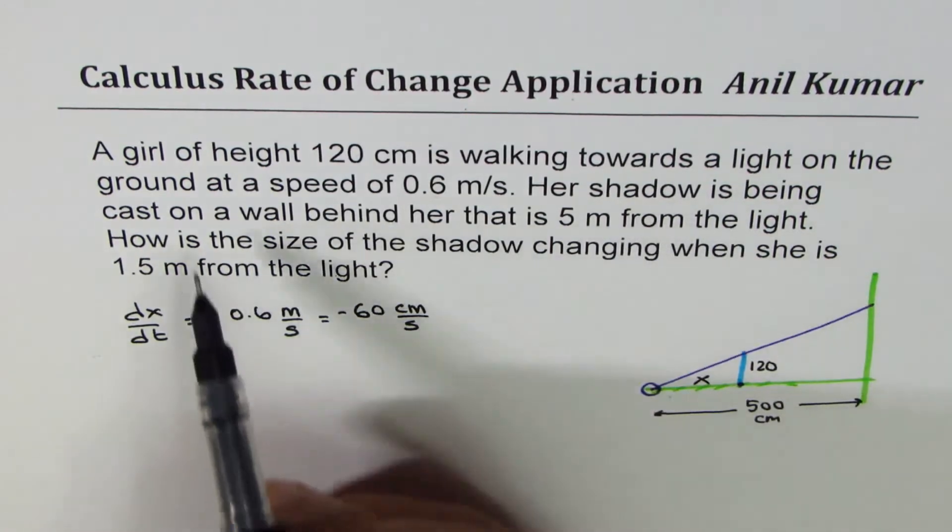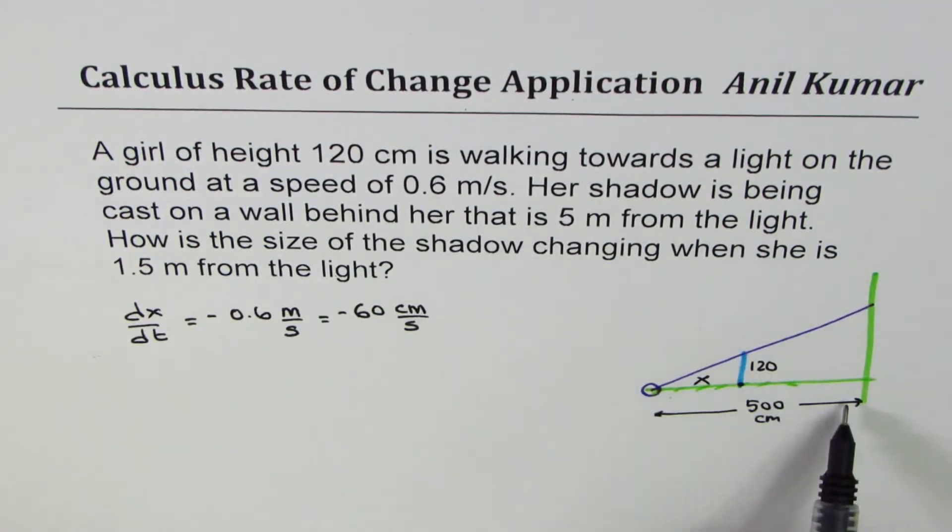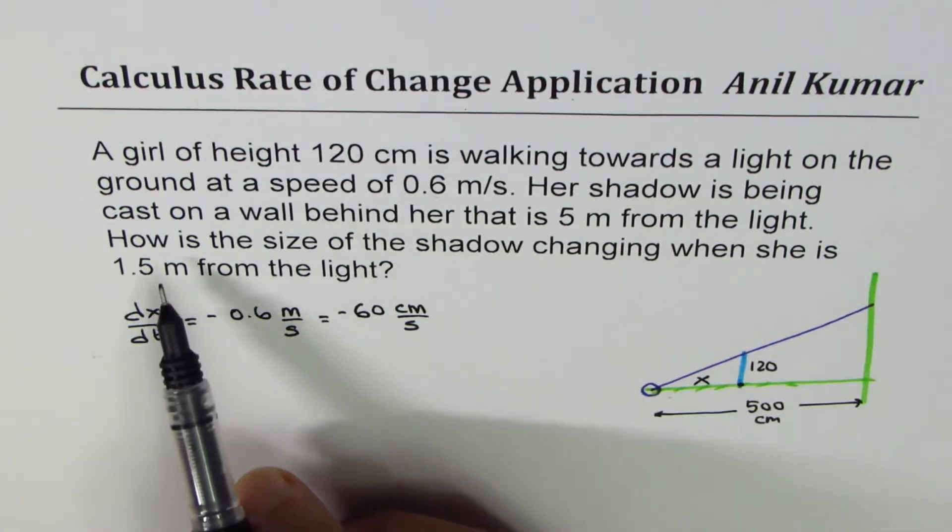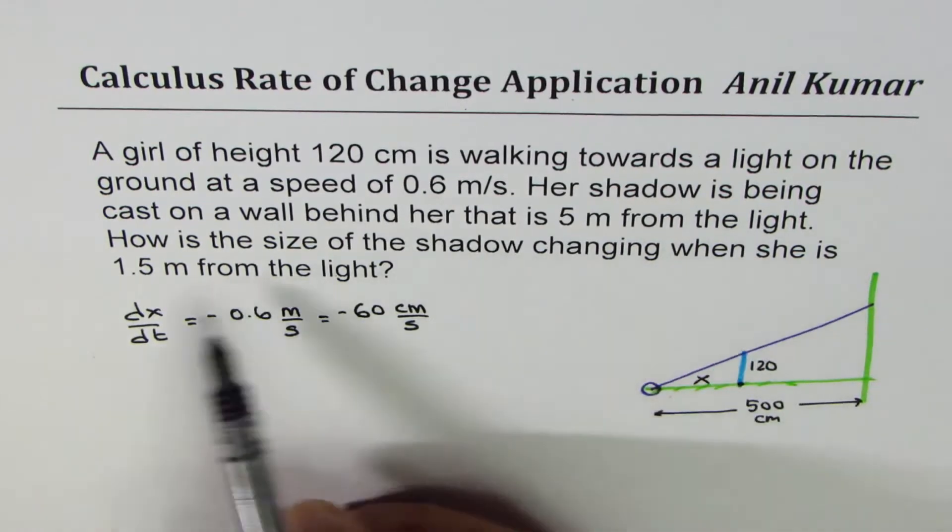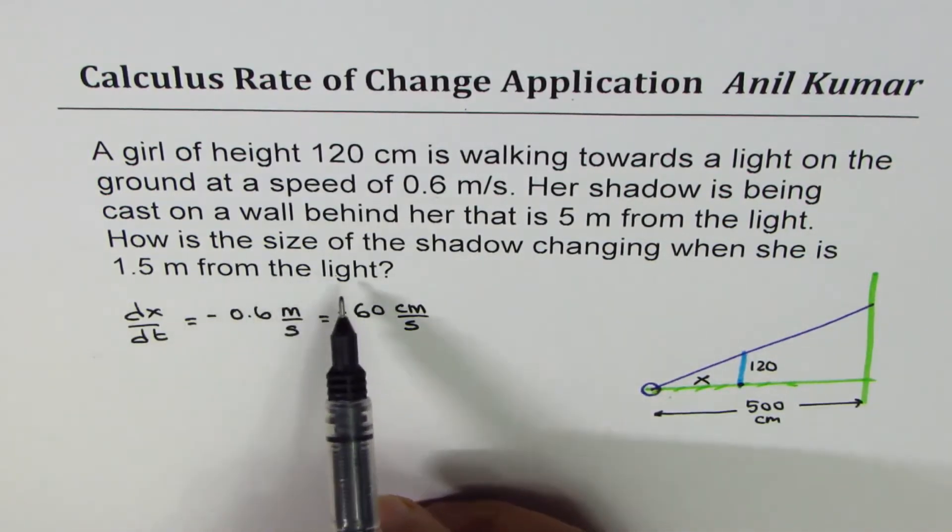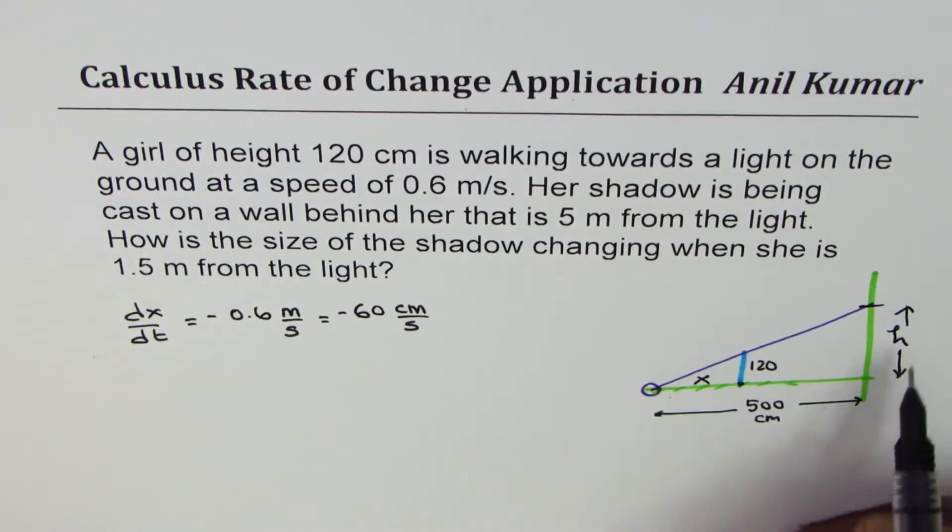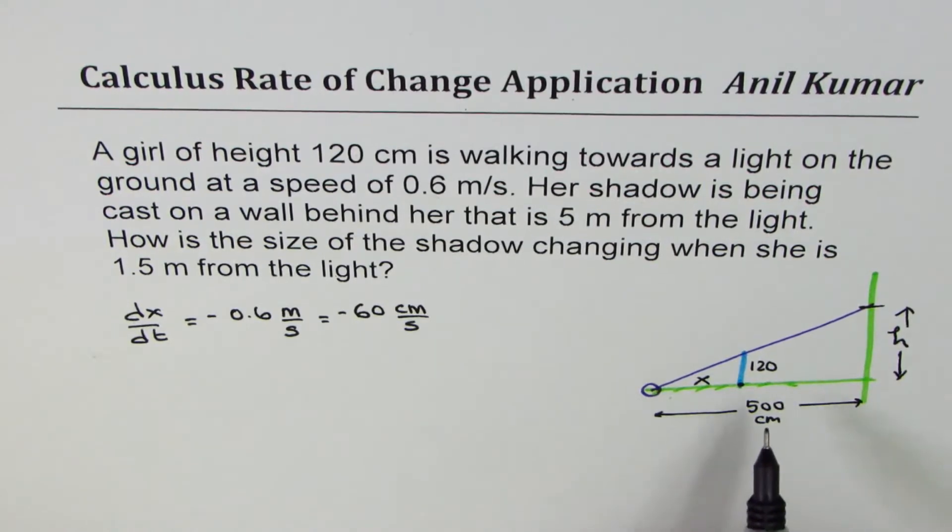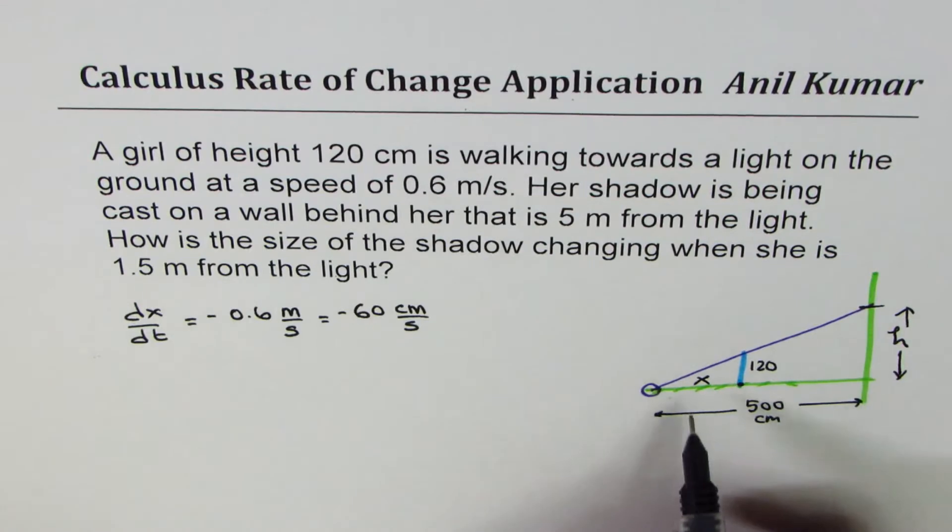Her shadow is being cast on the wall behind her, that is 5 meters, that is 500 centimeters from the light. How is the size of shadow changing when she is 1.5 meters from the light? So let's say that's the height we are talking about, and this height is changing. We want to find rate of change of the height at the instance when she is 150 centimeters.